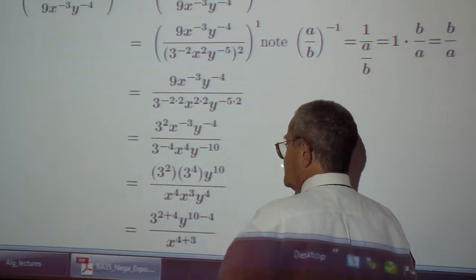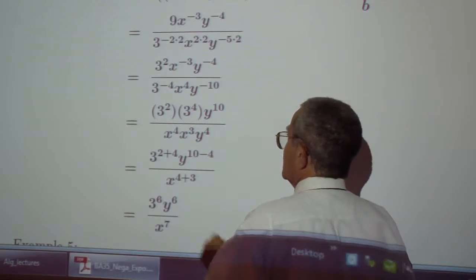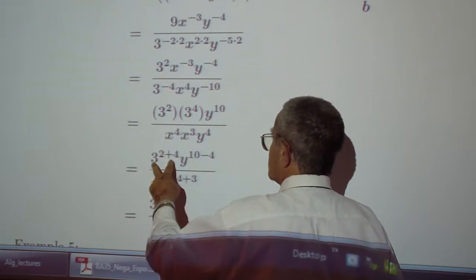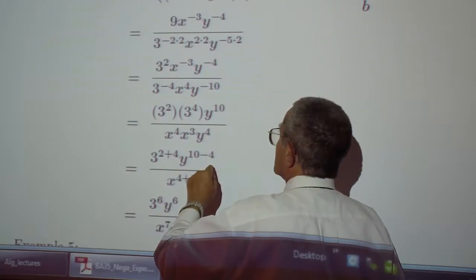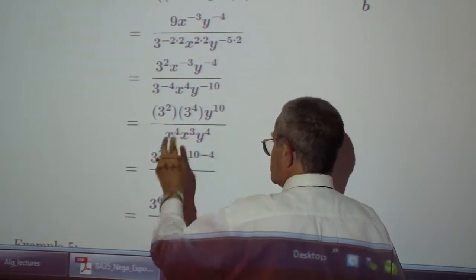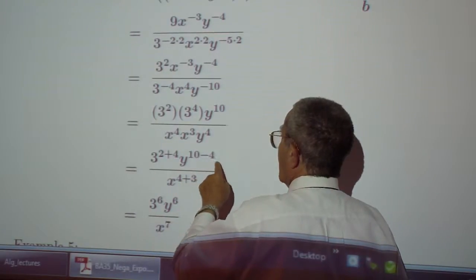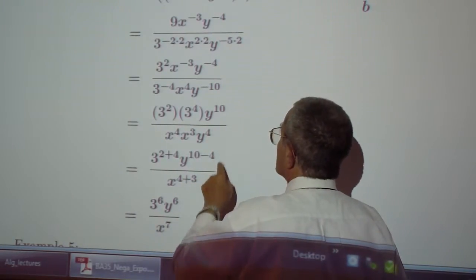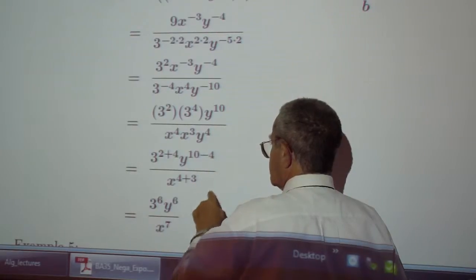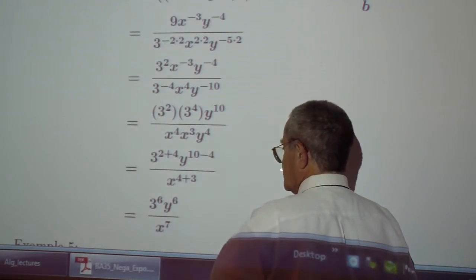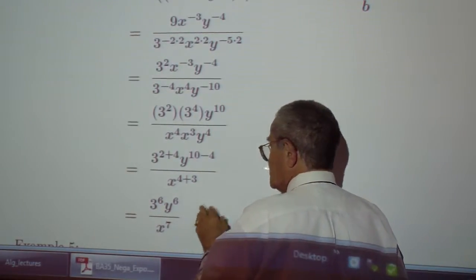So I took care of all the negative exponents. And then I can add the exponents, I get 3 to the 6, I get x to the 7 in the denominator, and I get y to the 10 minus 4, or 6 in the numerator. So this looks like it's okay.